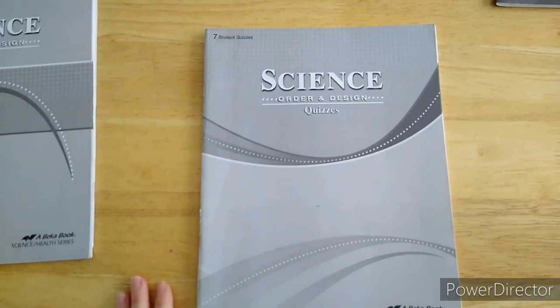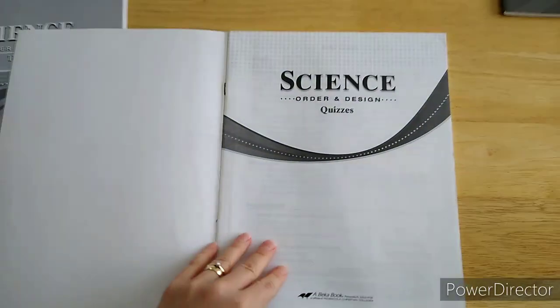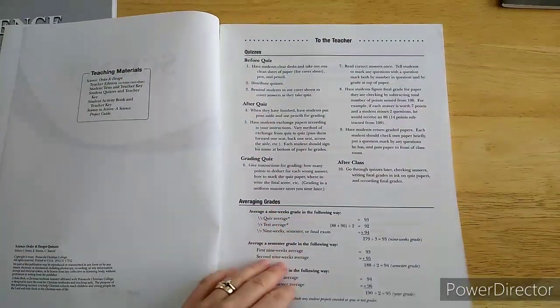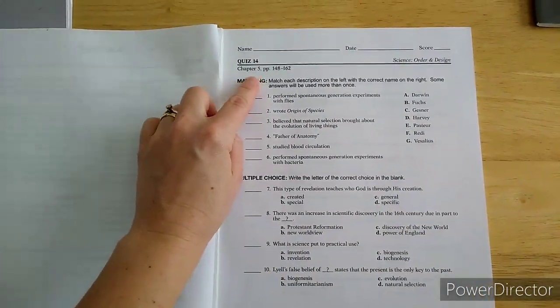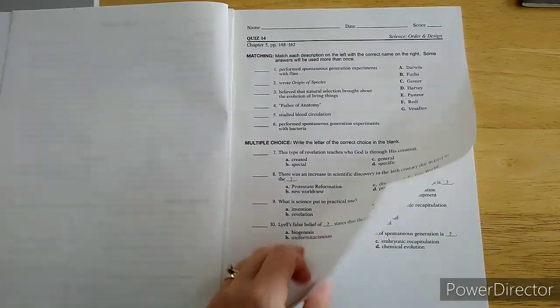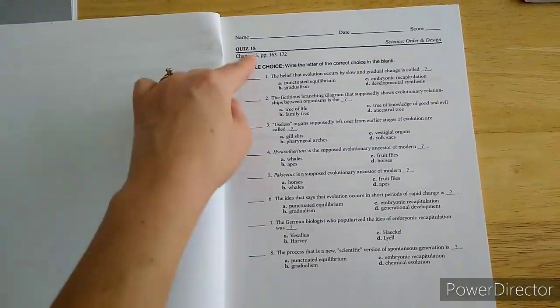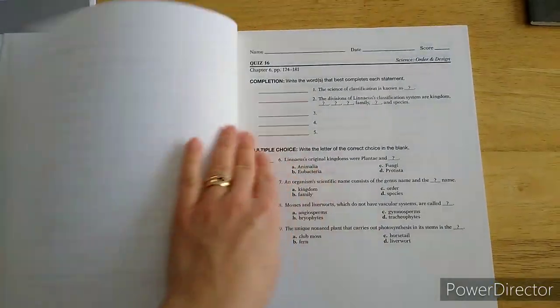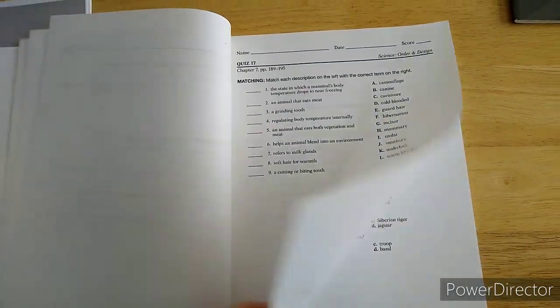The next thing to show you is the student quizzes. It's also paperback, and the quizzes are pretty short. Here's quiz 14. This covers a few pages of chapter 5. Then quiz 15 covers a few more pages of chapter 5. Quiz 16 covers some pages of chapter 6. You can see how short it is.